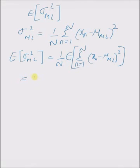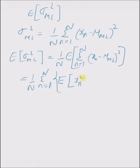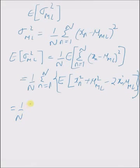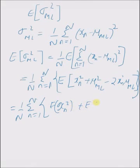Since expectation and summation are linear operators, we have 1/n times the summation from n=1 to N of the expectation of (x_n minus μ_ml) squared. Expanding, this gives the expectation of x_n squared, plus the expectation of μ_ml squared, minus 2 times the expectation of x_n multiplied by μ_ml. This expectation has three terms.